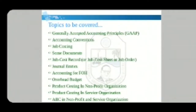The topics we are going to cover are: generally accepted accounting principles, accounting conventions, job costing, source documents, job cost record or job cost sheet or job order, general entries, accounting for factory overhead, overhead budget, product costing in non-profit organizations, product costing in service organizations, and activity-based costing in non-profit and service organizations.